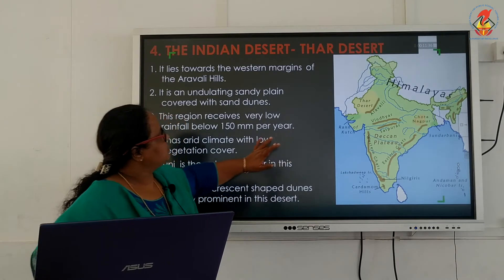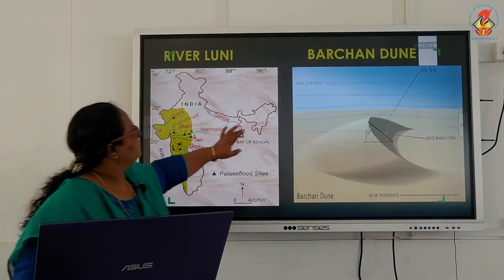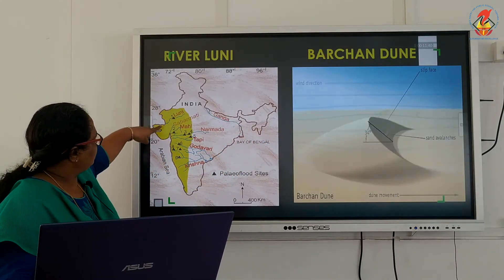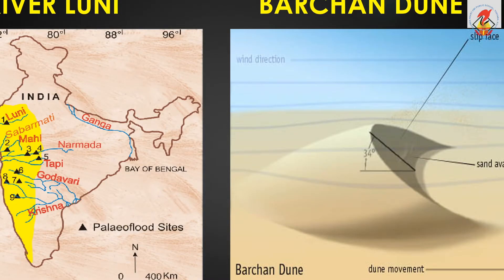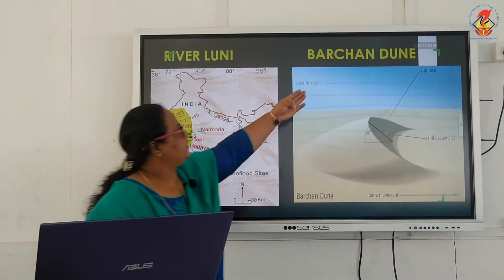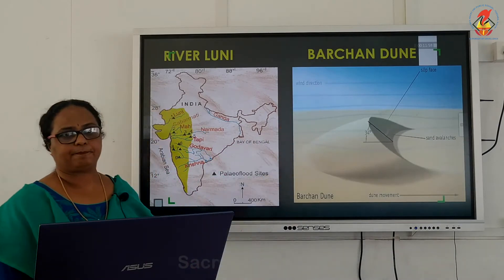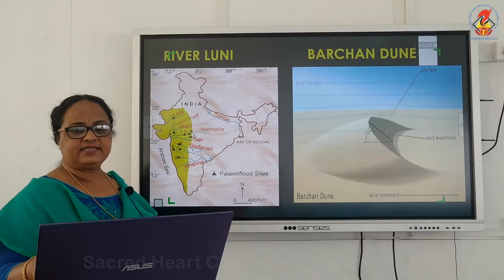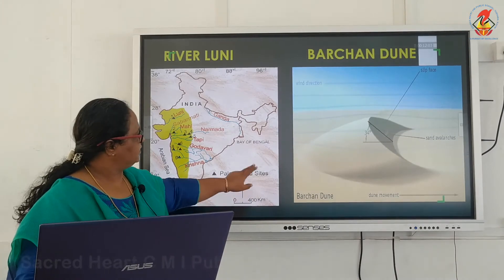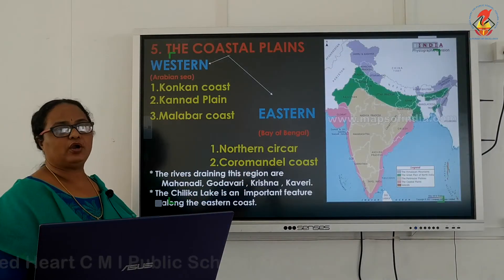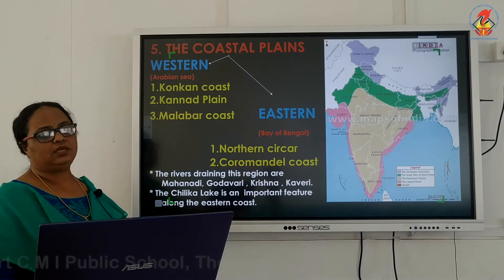The river Luni flows through the Thar desert region of Rajasthan. Another important prominent feature of the Thar desert is the crescent-shaped dune, known as a barchan.